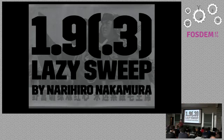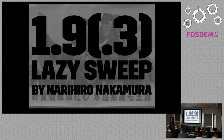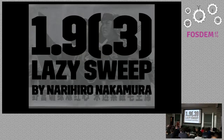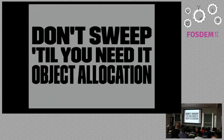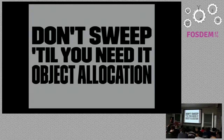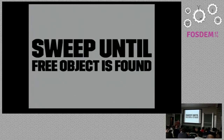Ruby Enterprise Edition fixed that with a method that also came to core in 2.0. In 1.9, Naruhiro Nakamura gave us lazy sweeping. The whole idea is you don't sweep until you need it — break the sweep phase into multiple smaller phases. We still have one big stop-the-world mark, but we sweep only in smaller increments when we actually need new slots. We sweep until we have enough free objects, go back to program execution, then sweep again as needed.